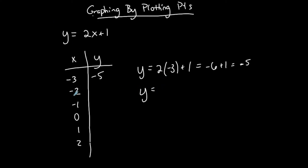My second point. When x is negative 2, I'm going to replace x with negative 2. Solve for y and negative 4 plus 1, which is negative 3. So when x is negative 2, y is negative 3. Next, when x is negative 1, 2 times negative 1 plus 1. This is negative 2 plus 1 or negative 1.